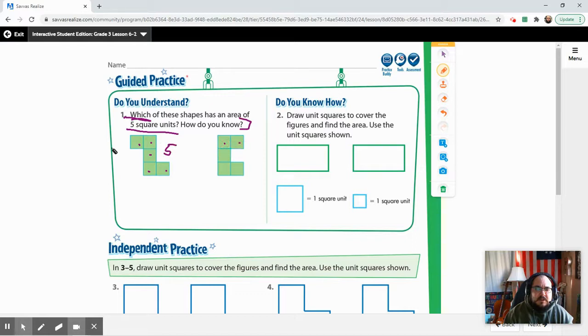What about this one? One, two, three, four, five. Well, it was kind of a trick question, wasn't it? It says which of these shapes has an area of five square units? Well, they both do. So you would want to write both of these shapes have an area of five square units because both have five unit squares covering the region. There are no overlaps and they're covering the entire shape.